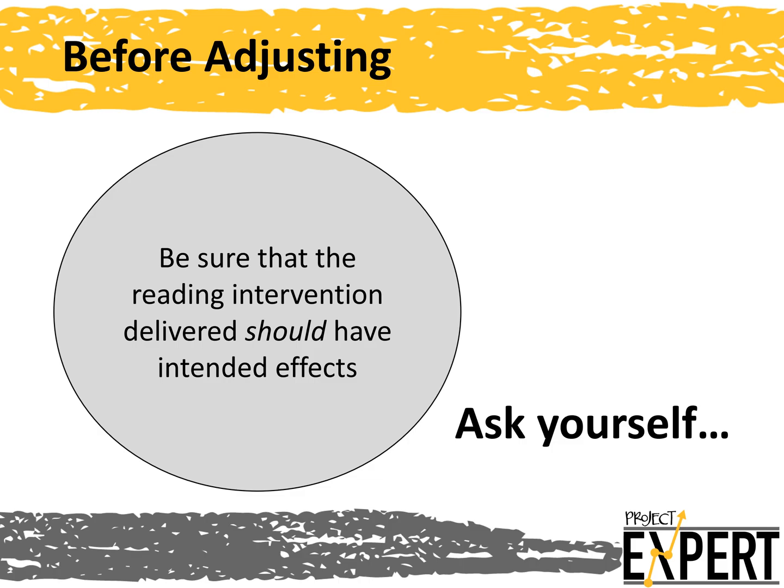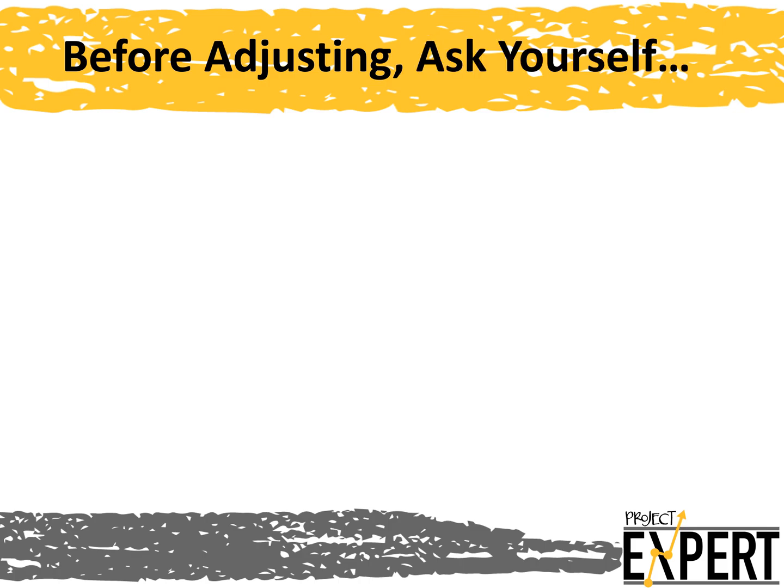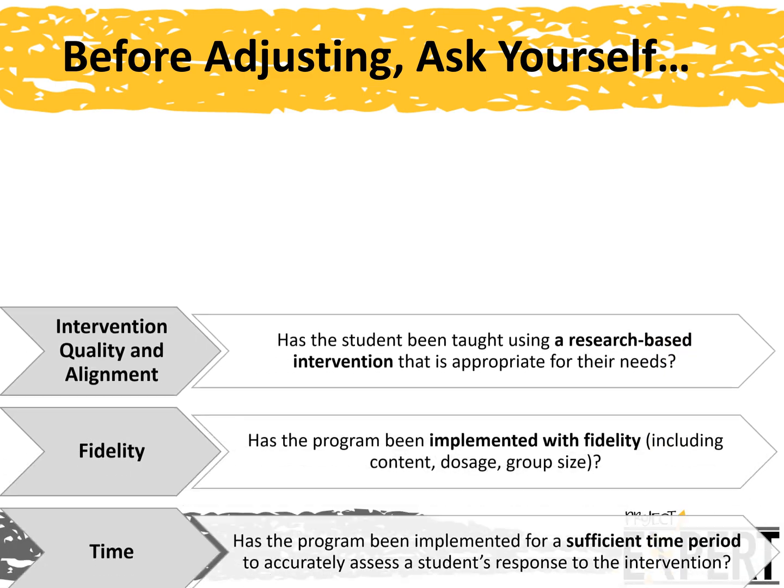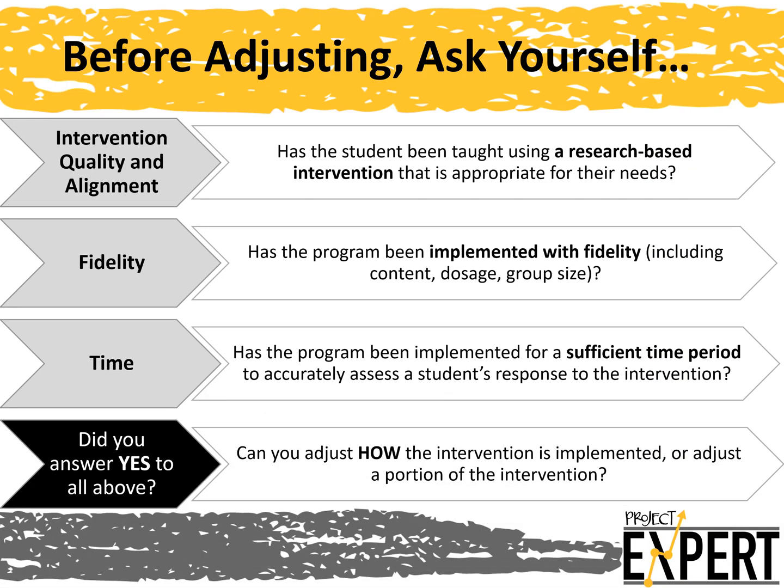Ask yourself: Has the student been taught using a research-based intervention that is appropriate for their needs? Has the program been implemented with fidelity, including content, dosage, or group size? Has the program been implemented for a sufficient time period to accurately assess the student's response to the intervention? Did you answer yes to all of the above? Can you adjust how the intervention is implemented or adjust a portion of the intervention? If you answer no to these questions, then you need to determine if the intervention you originally implemented at the start of the DBI process is well aligned with your target behavior and begin progress monitoring again.